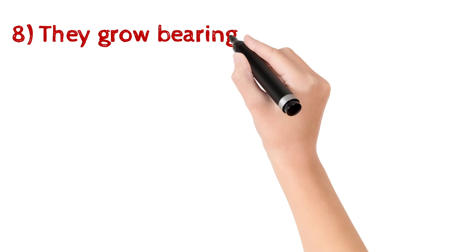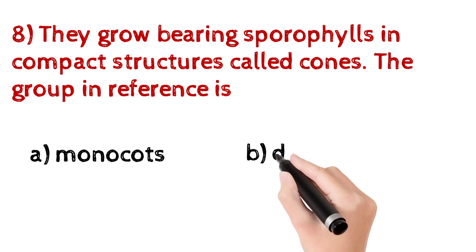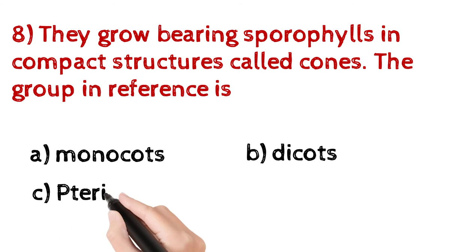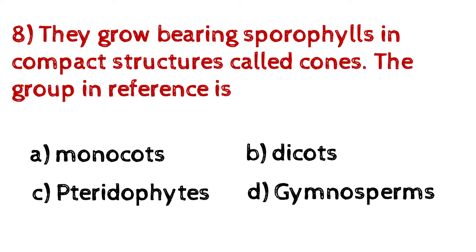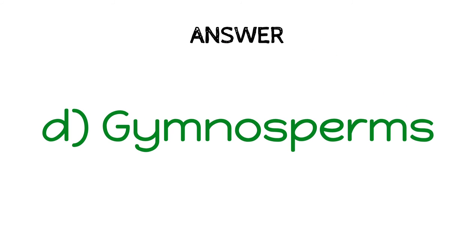Question number eight: they grow bearing sporophylls in compact structures called cones. The group in reference is — A) Monocots, B) Dicots, C) Pteridophytes, D) Gymnosperms. And the answer is D) Gymnosperms.